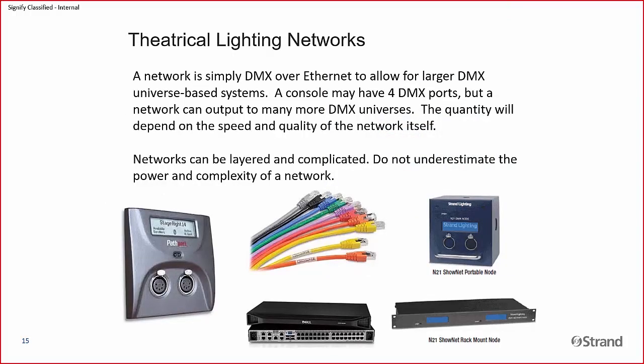Theatrical lighting networks began to be used when our lighting systems were outgrowing the number of universes that the consoles could output over hard DMX. Consoles often will have two or four ports — larger desks may have eight DMX ports — but so many systems nowadays need to communicate to larger systems than what that can accommodate. The industry figured out how to take a standard office network — basic TCP/IP networking equipment — and convert the DMX signal to communicate over network cabling and network switches using network nodes.